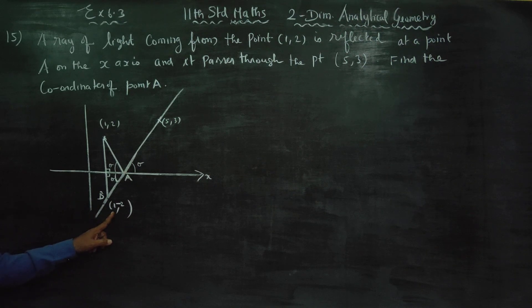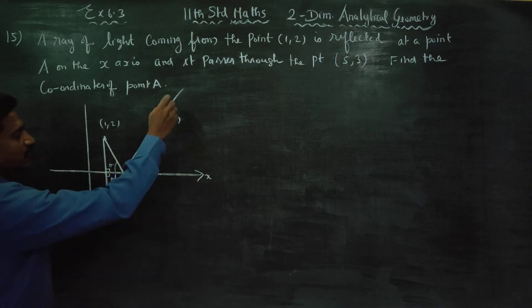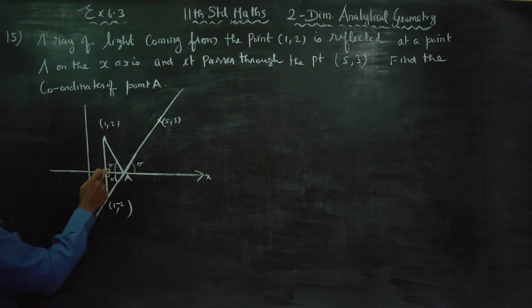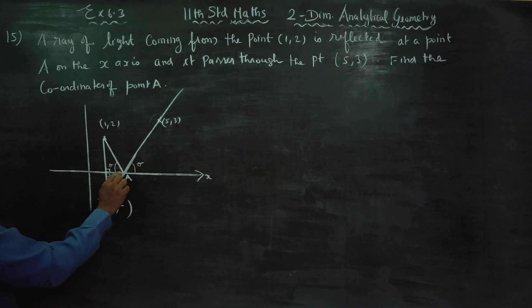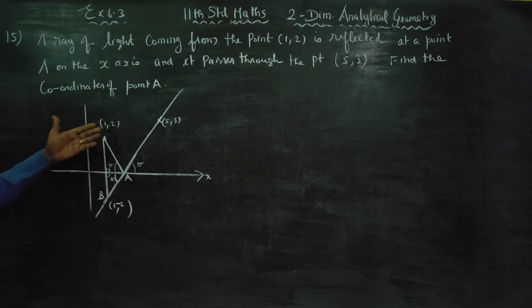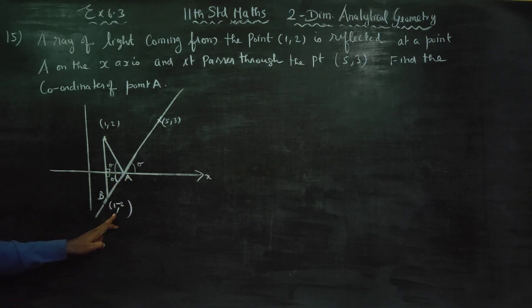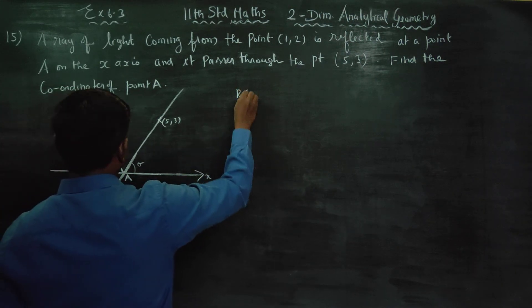One comma minus two. Using angle of incidence equal to angle of reflection, vertically opposite angles are equal, the two 90 degree perpendiculars are equal, and these two angles are equal with one common side. The two congruent triangles give us that the reflected point B is (1, -2). Since it is in the fourth quadrant, x is positive and y is negative.